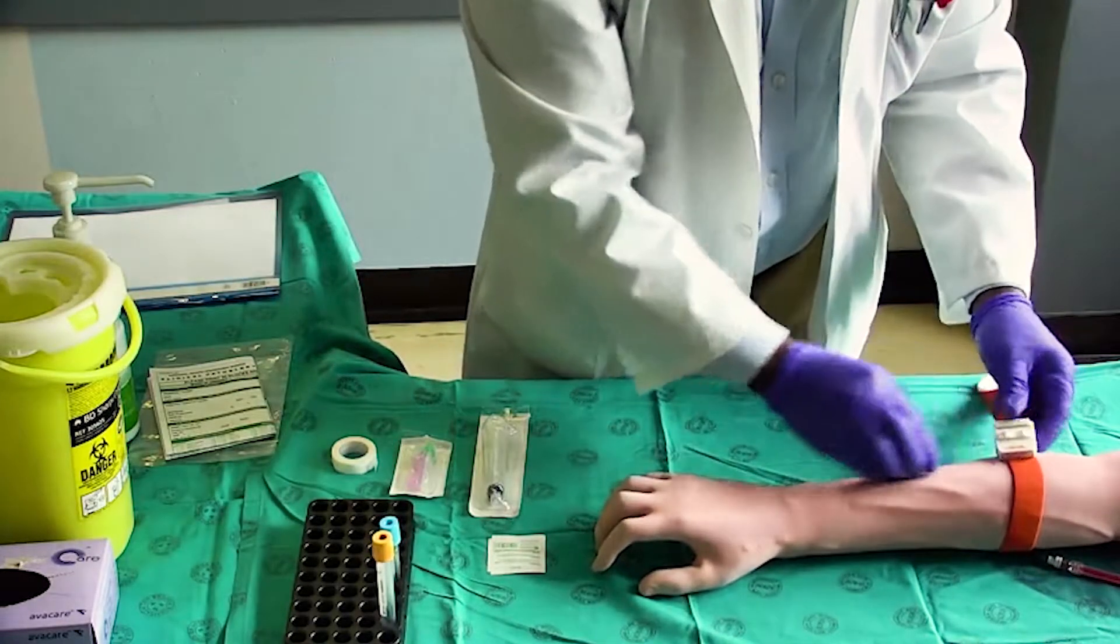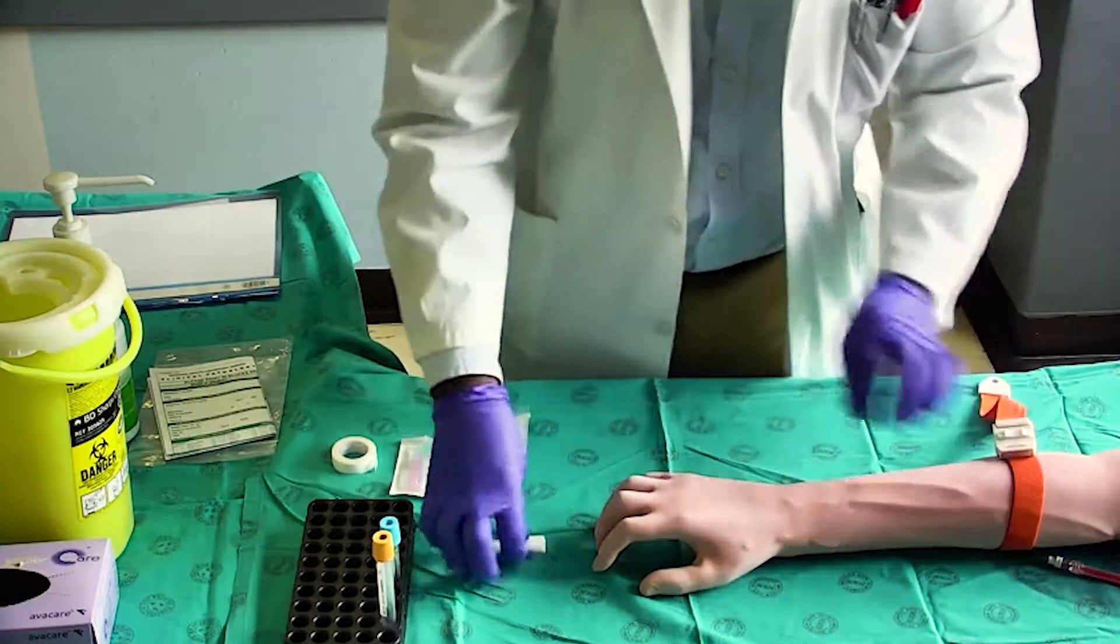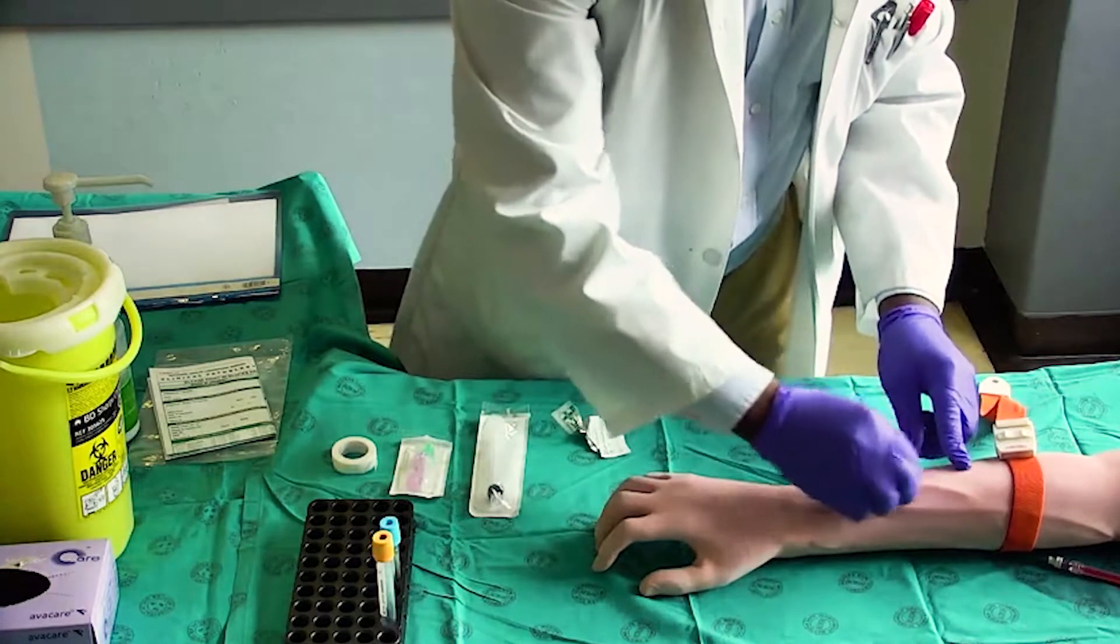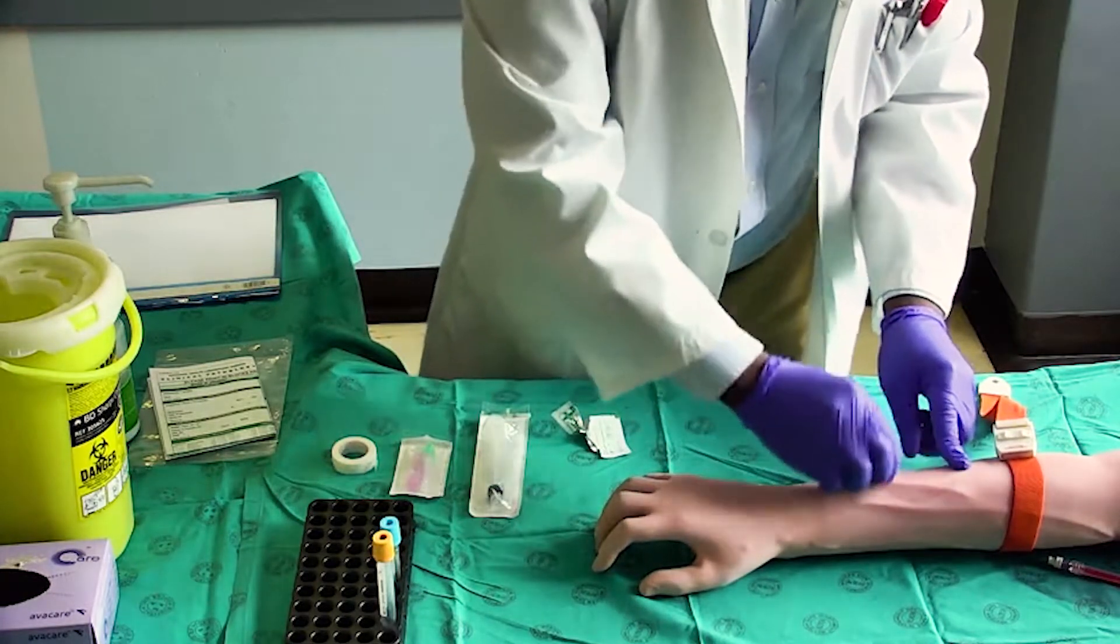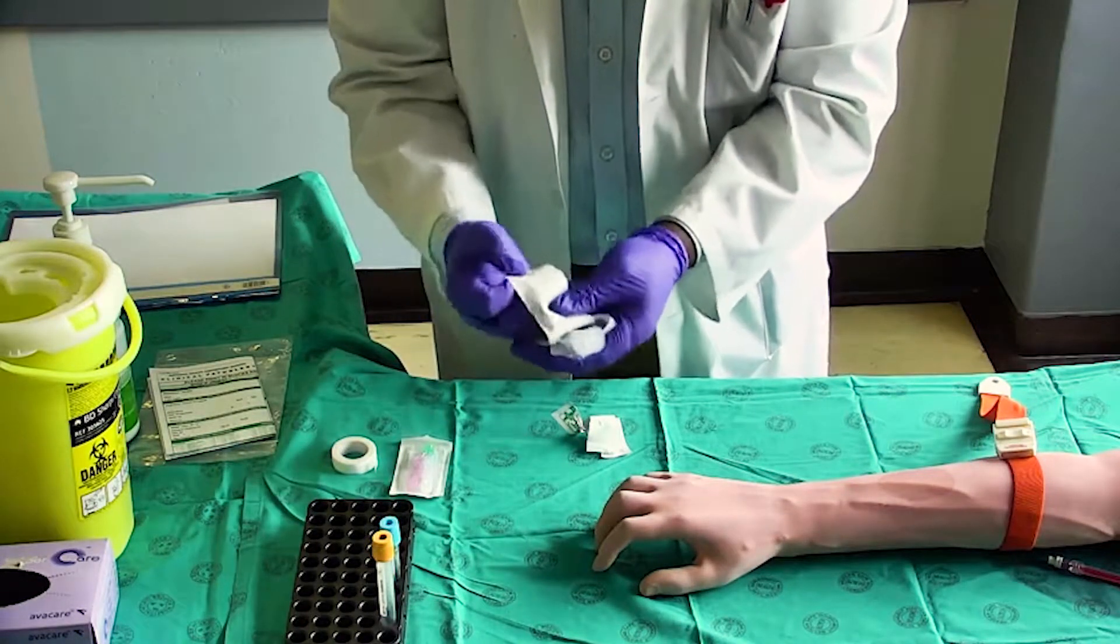Apply the tourniquet four to five finger widths above the antecubital fossa. Locate and palpate an appropriate vein. Clean the area of skin with an alcohol swab for 30 seconds in a circular motion from the center outwards. Allow the skin to air dry for 30 to 60 seconds.